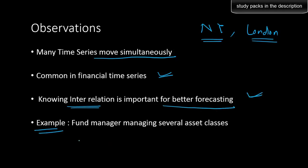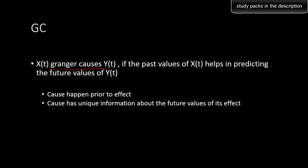Knowing the interrelation is very important for better forecasting. For example, a fund manager managing several asset classes will find that they are very correlated. You can use the time series data for different asset classes to help predict the future values of a given asset class. That's exactly the reason why we need to understand what Granger causality is.